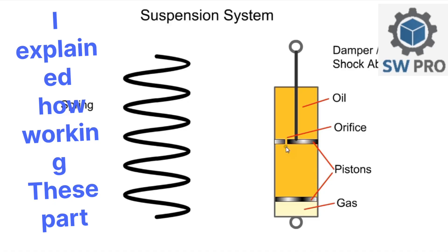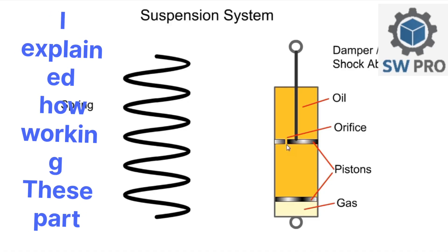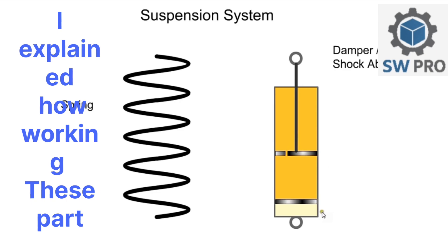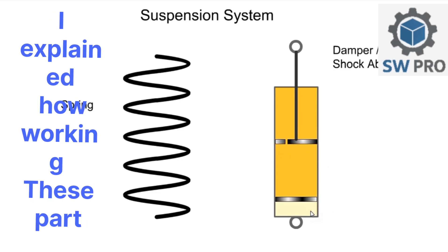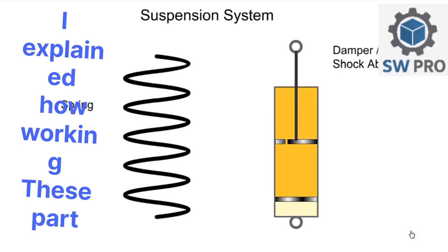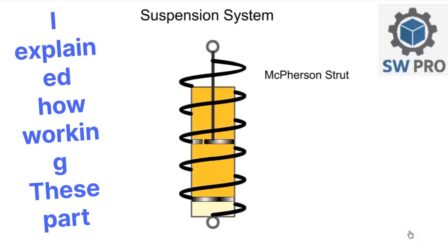It consists of an oil-filled chamber, and the flow of oil through the piston is restricted by a small orifice. When the top rod moves down, the gas below the bottom piston is compressed to allow for the extra rod volume.